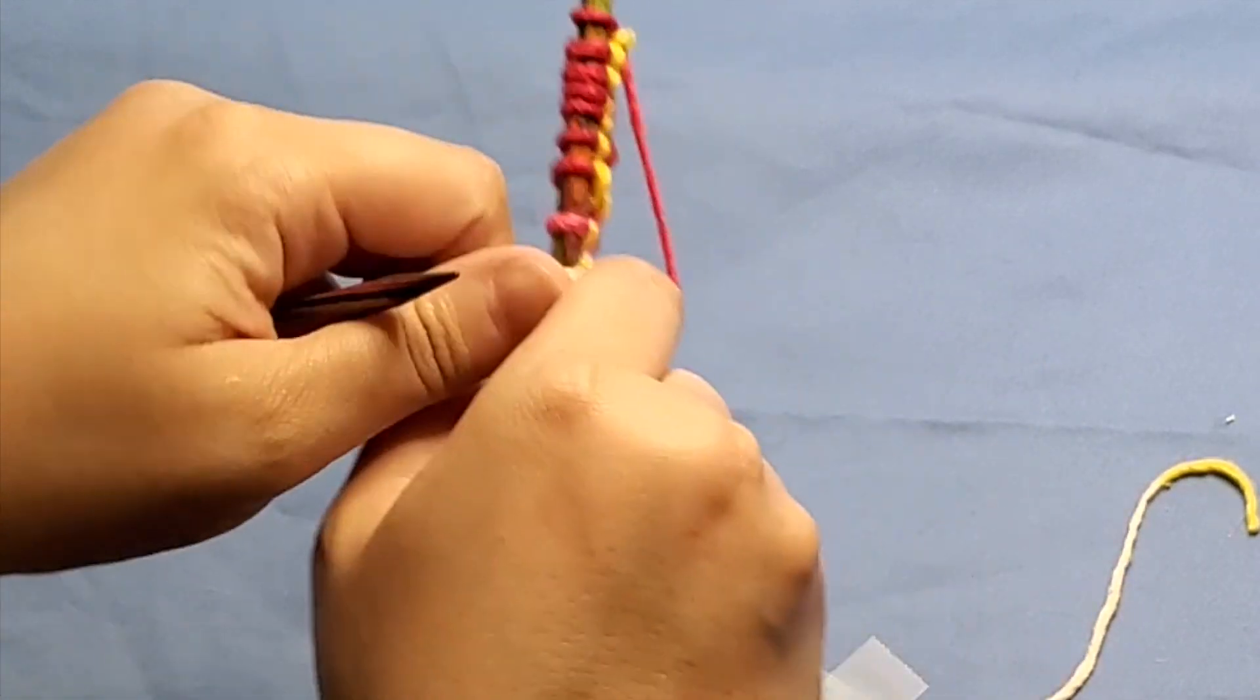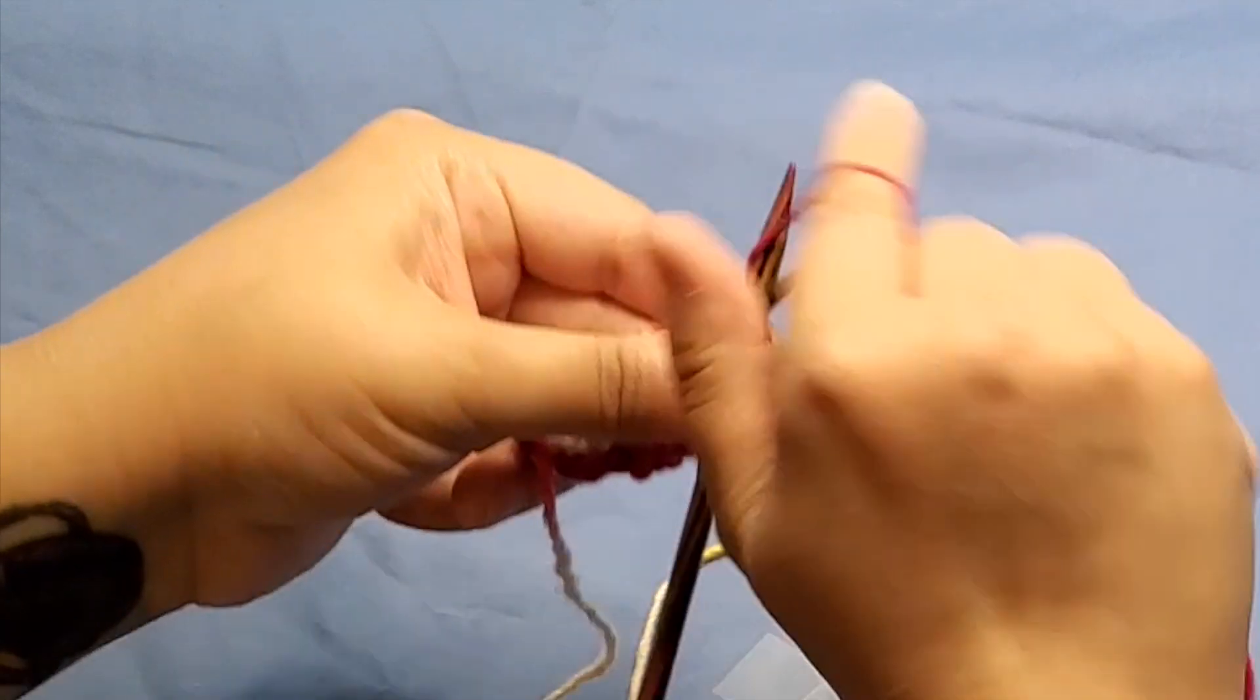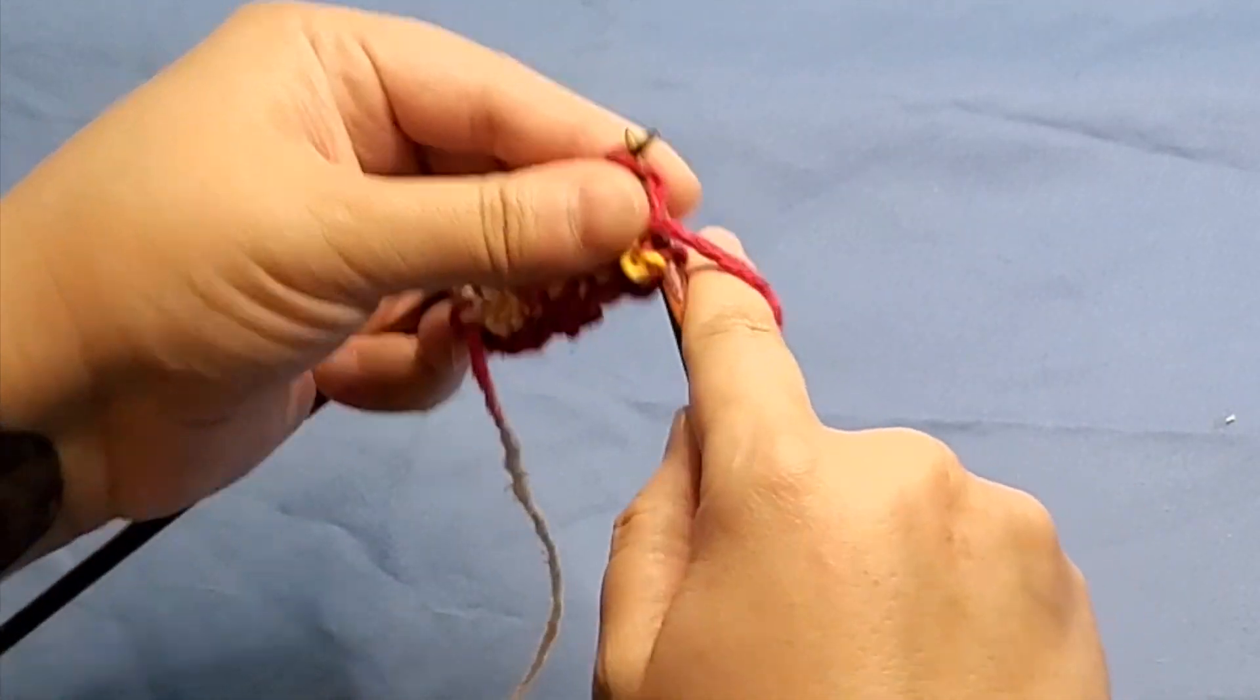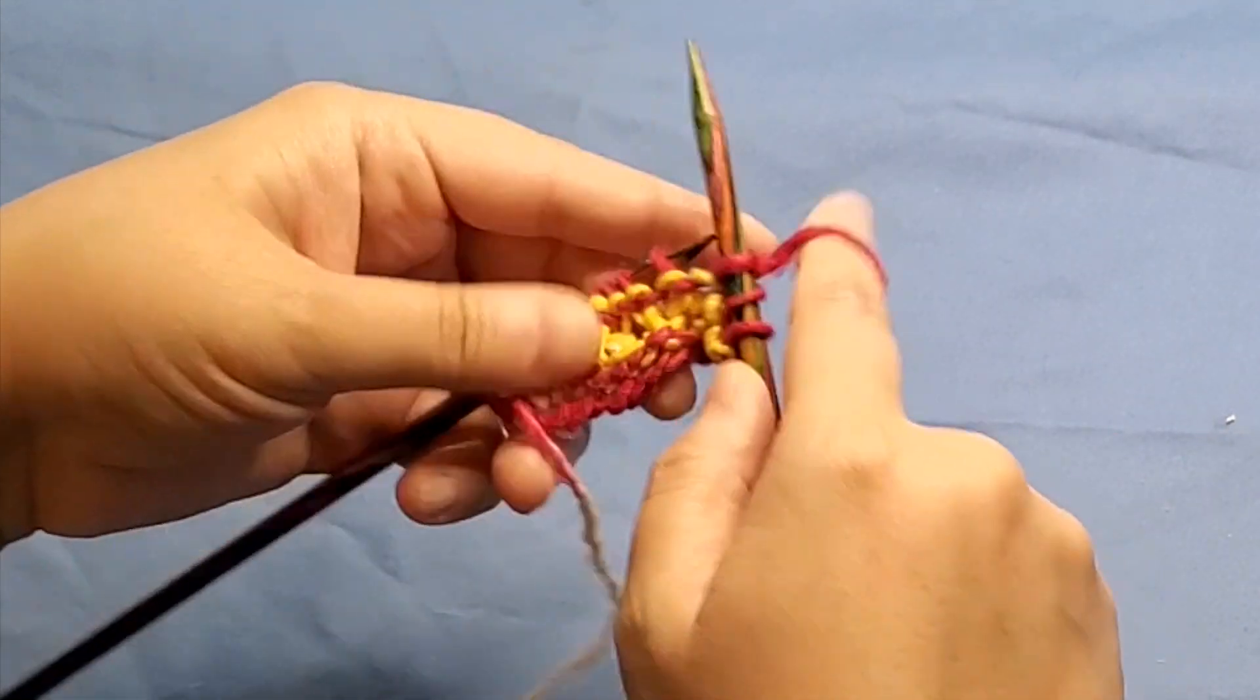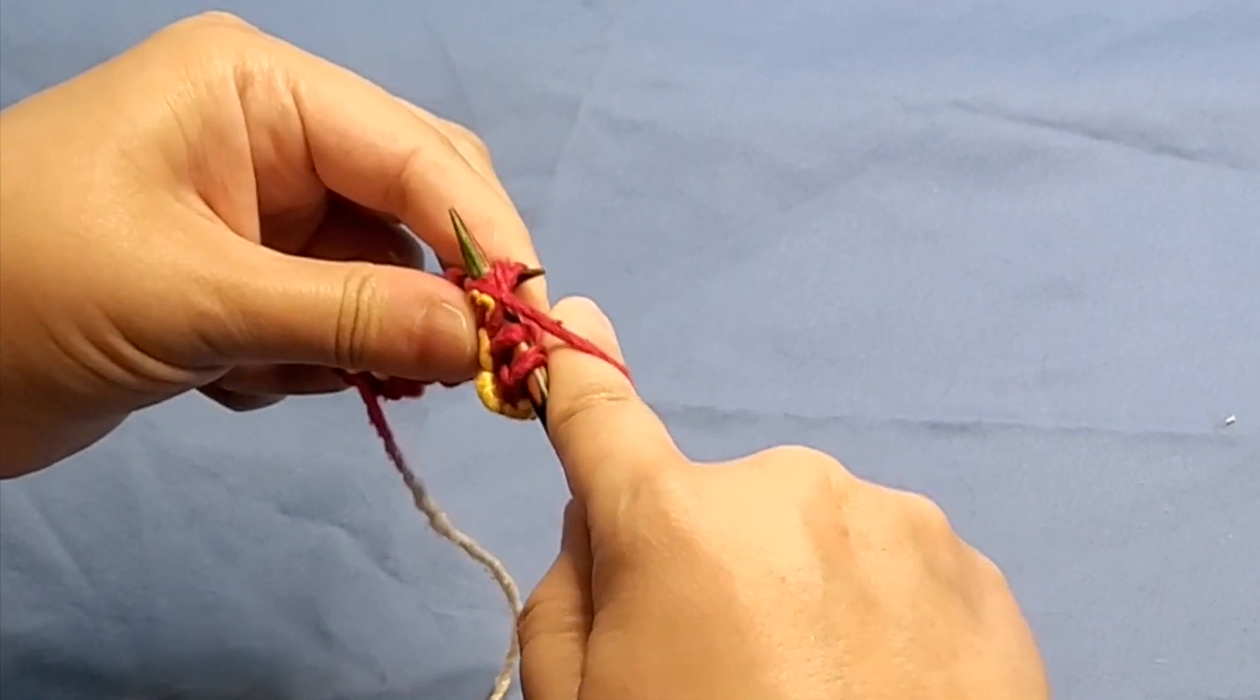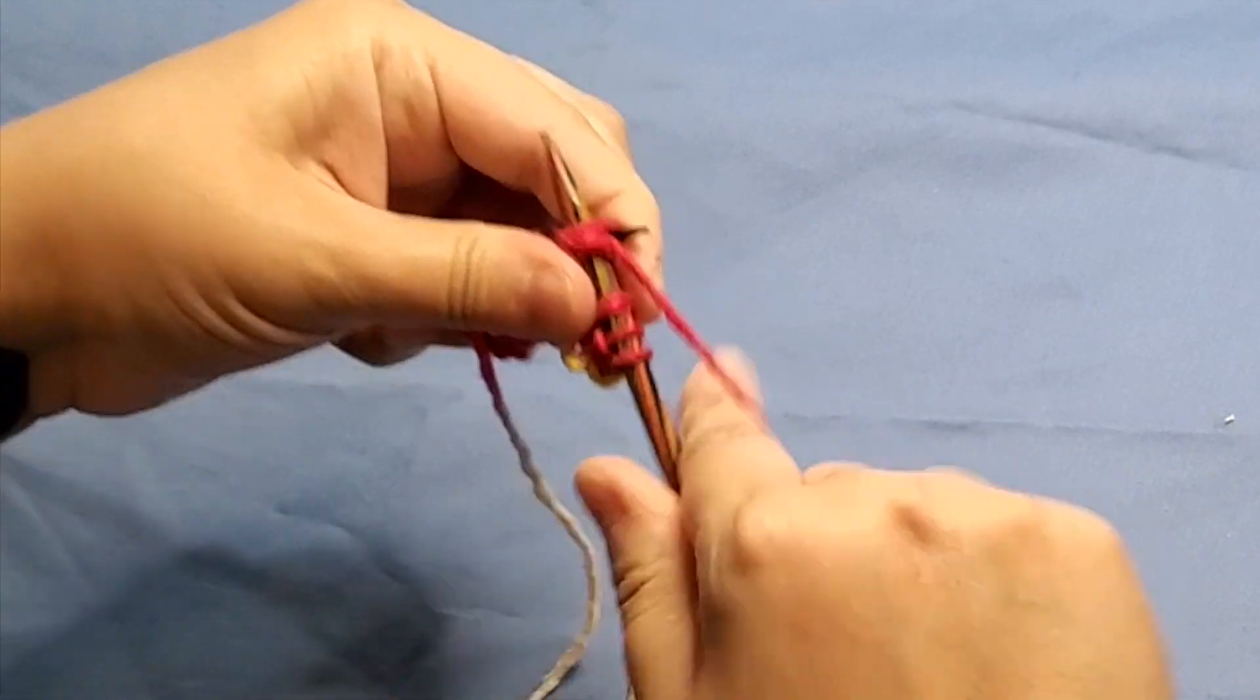I'm just going to end this knit row. And then this is row four. It's only a four row repeat. So you're almost there. You're going to knit one, purl one, knit one, and then you're ready to do the daisy stitch again. Where you're going to purl three together. One, two, three. Yarn over and purl three together again, all through those same three stitches.